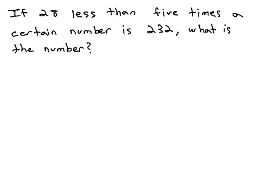Here, we are told if 28 less than 5 times a certain number is 232, we want to find what is the number. The first key phrase here we see is less than. Less than implies we are subtracting.